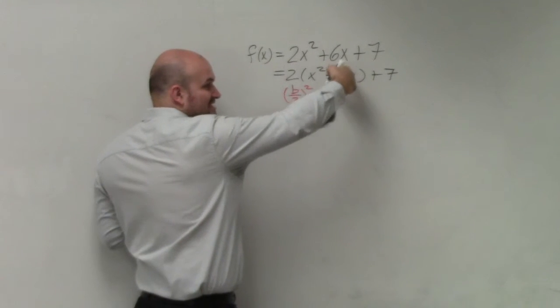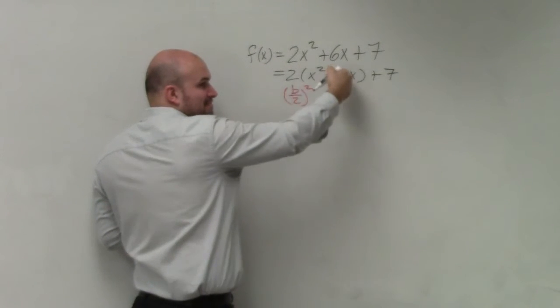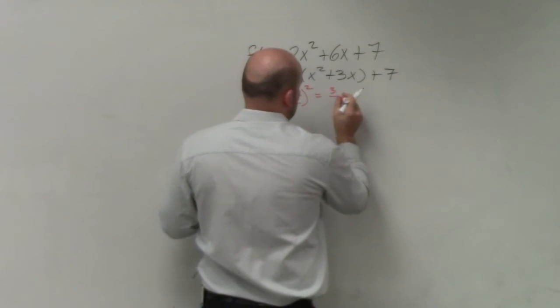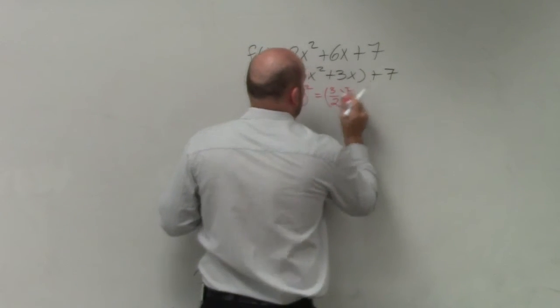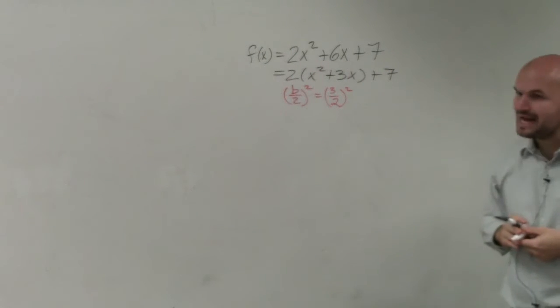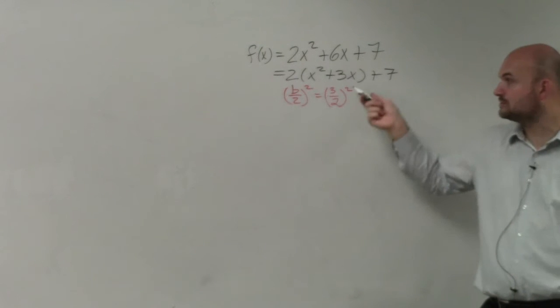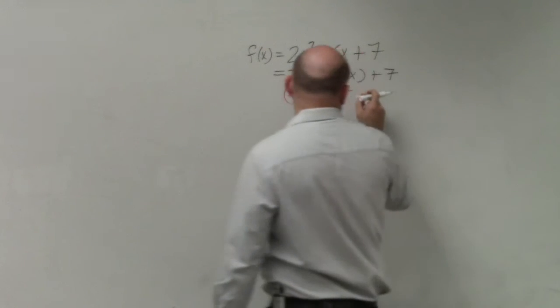b, in this case, is 3. So after I factor out the 2, my b in my parentheses is 3. So what I'll do is I'll take 3 divided by 2 and square it. Now, 2 doesn't divide into 3 like we've done in these other problems, right? That's okay. We'll just square it, and that's going to give us 9 fourths.